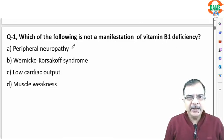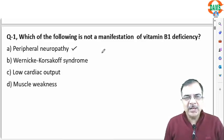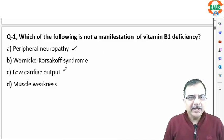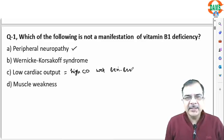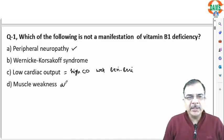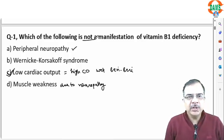Thiamine deficiency causes peripheral neuropathy, which is known as dry beriberi. It also leads to Wernicke's syndrome, consisting of ataxia, ophthalmoplegia, and mental confusion. Importantly, it causes high cardiac output failure — not low cardiac output — which is known as wet beriberi. Muscle weakness is also part of thiamine deficiency due to neuropathy. The correct answer is low cardiac output state, which is not a manifestation.